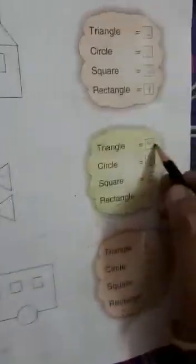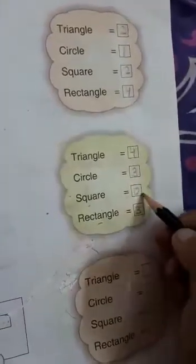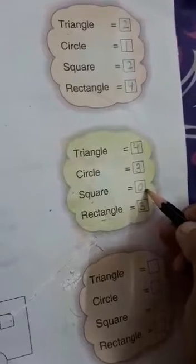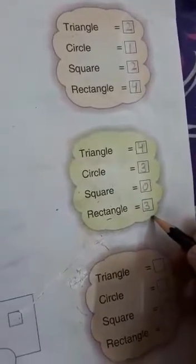Triangle 4. Circle 3. Square 0. Rectangle 3. Clear?